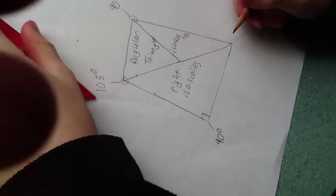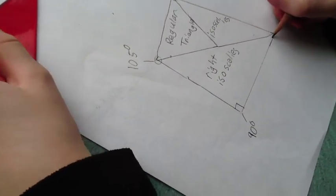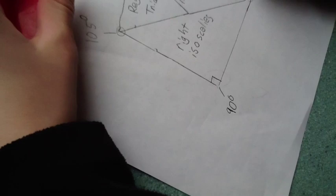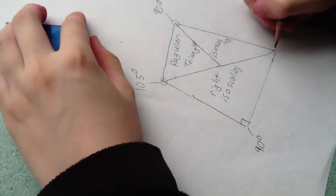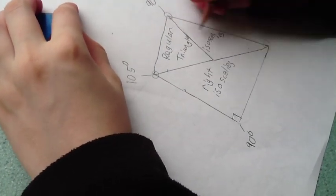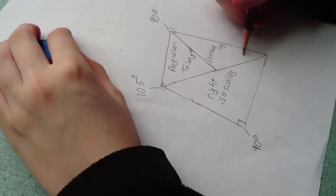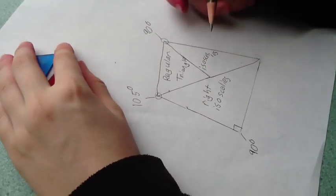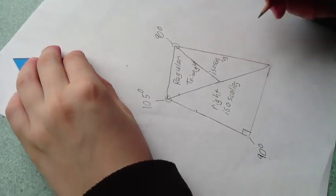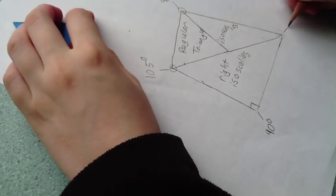So then this angle here, it's 45 plus 30 because it's depending on the 30 and on that one. Because those angles are both the same size, so it is 75 degrees.